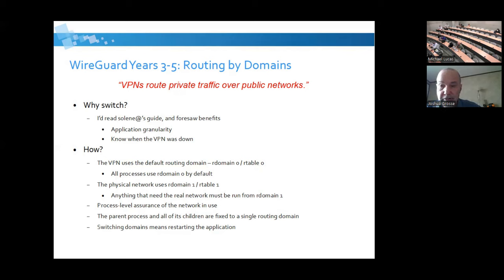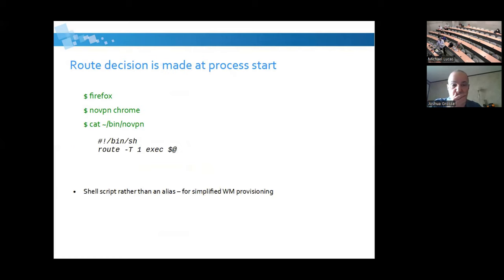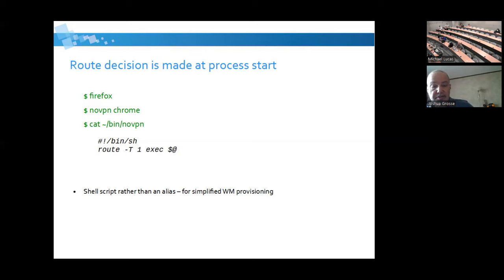The way I've set this up is my physical networks are connected via rdomain 1, and my default domain is rdomain 0, which runs through WireGuard. I can, through 'route exec' which I have aliased, say this application goes through the VPN and that application does not. As an example, I can run Firefox, which by default runs through the VPN, and then run Chrome without the VPN by using a little alias that routes Chrome through routing domain 1. I'm still using a small shell script because it makes provisioning in my window manager a little easier.